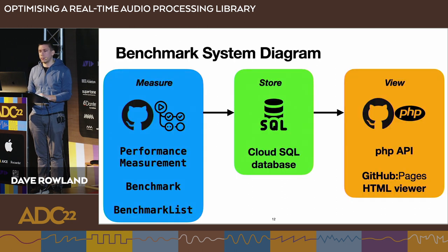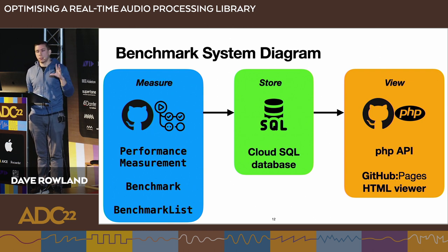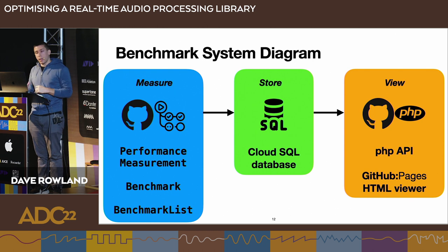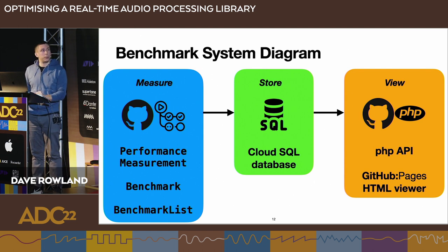Putting it all together, our system has three parts: we measure our code running on GitHub Actions; we collect metrics and results from our benchmarks and push them to a cloud database; and then on GitHub Pages we query a PHP wrapper around SQL to graph the data over time using a JavaScript graphing library, allowing us to view results across time.